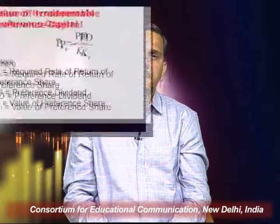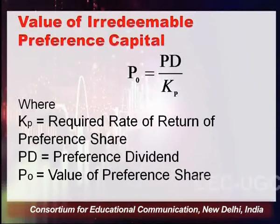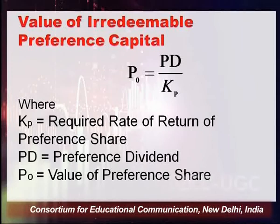For irredeemable preference shares, the formula is much simpler: P₀ = PD ÷ kp, where PD is the preference dividend and kp is the required rate of return. Just like in the case of bonds where you take the interest and divide by the rate of return, here you take the dividend and divide by the rate of return to get the price of the share.